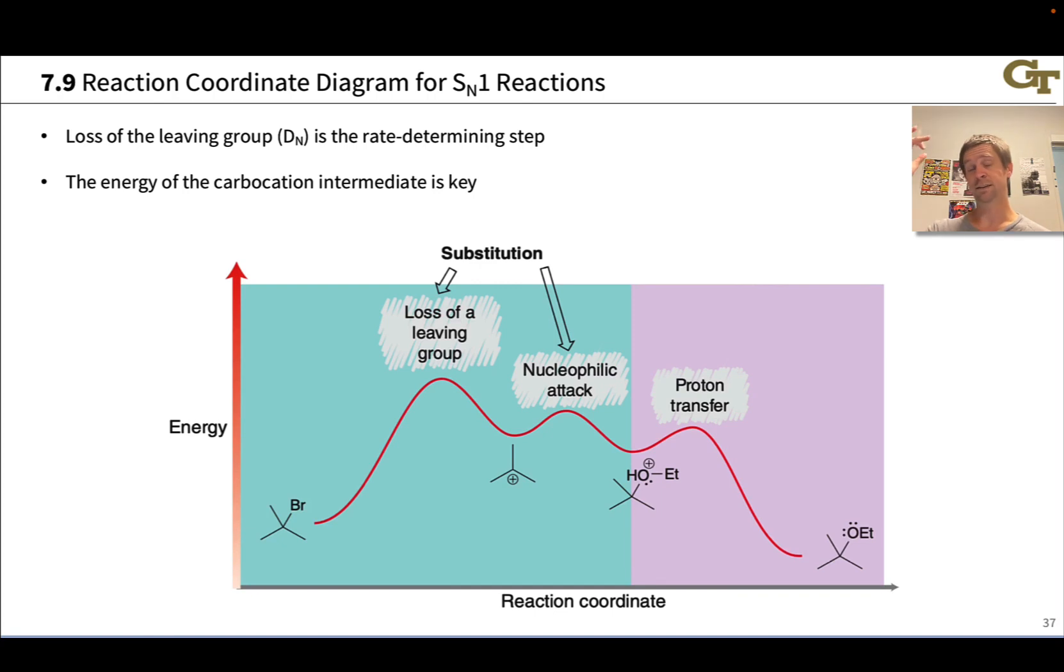So, because this is endothermic, and it's got the highest energy transition state, the activation energy for the reaction is associated with this transition state for the loss of a leaving group step. But, thanks to the Hammond postulate, and the fact that this reaction is endothermic, the energy of this transition state is deeply related to the energy of the carbocation intermediate that forms as a product of this first step.